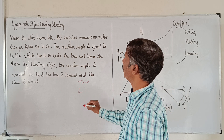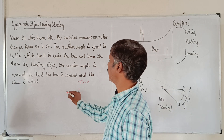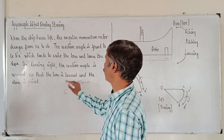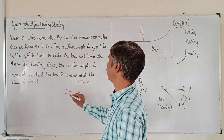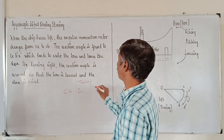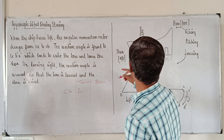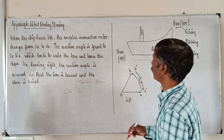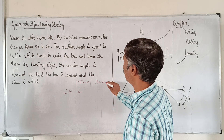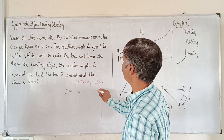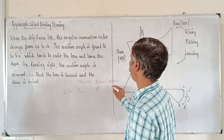On turning right, the reaction couple is reversed so that the bow is lowered and the stern is raised. So if the bow rises, it should be lower.